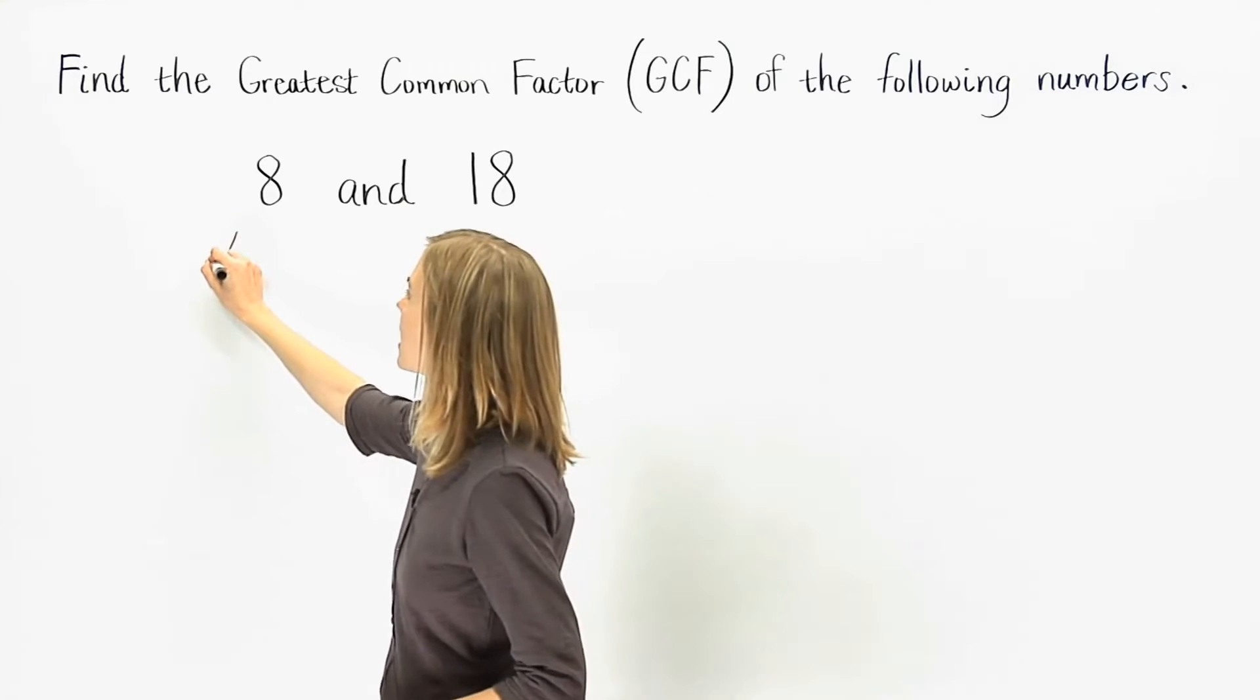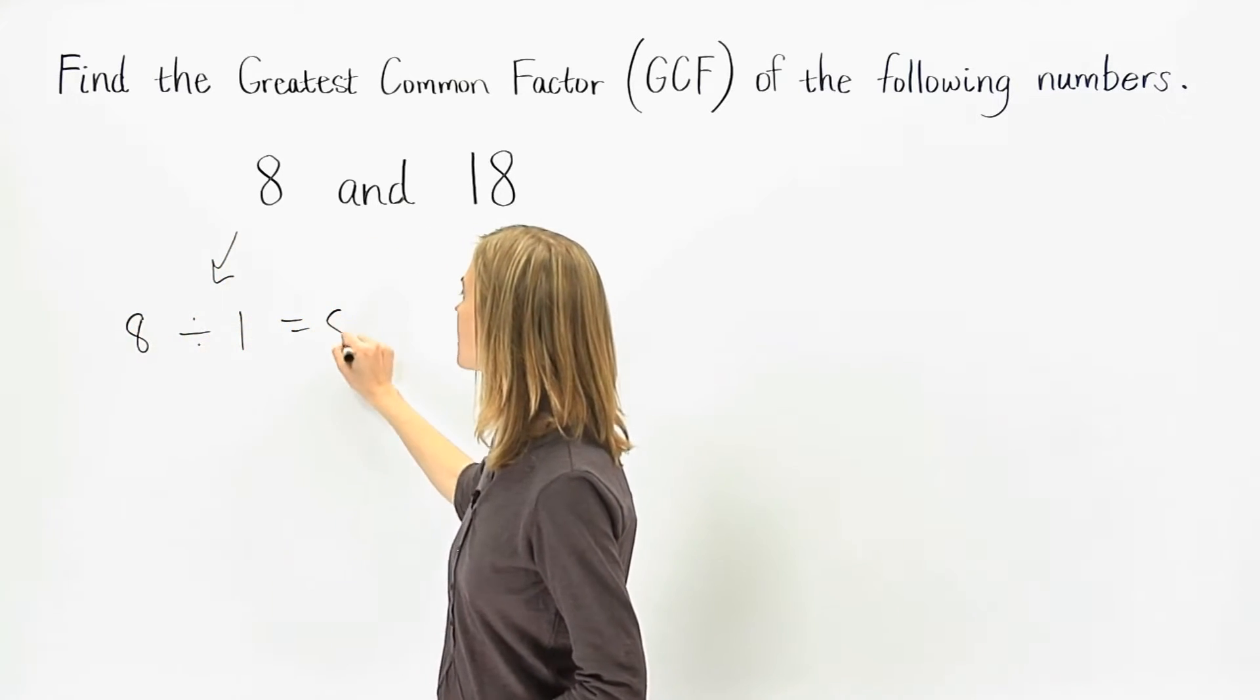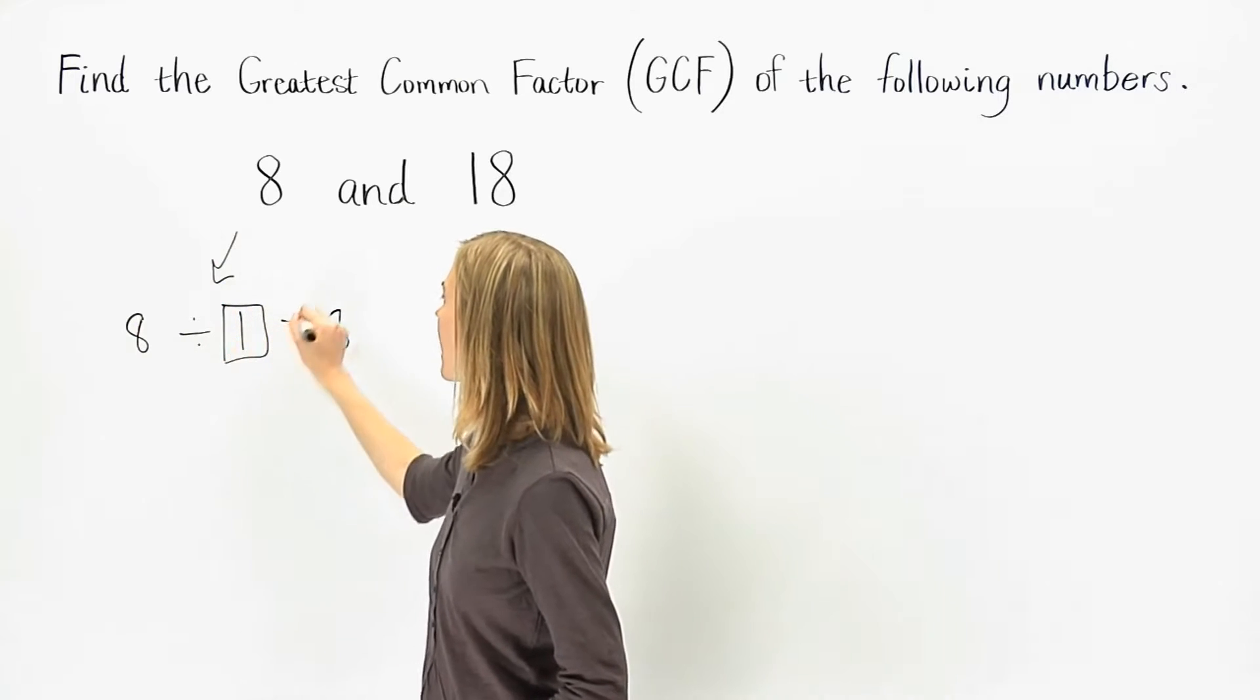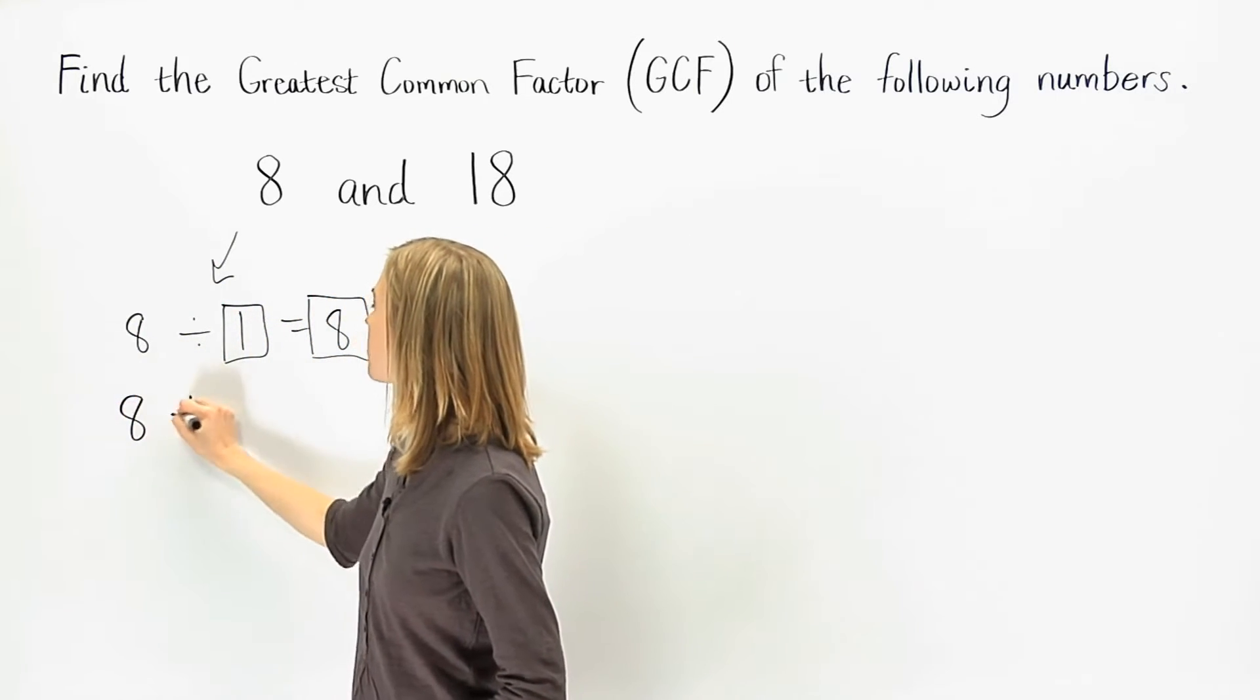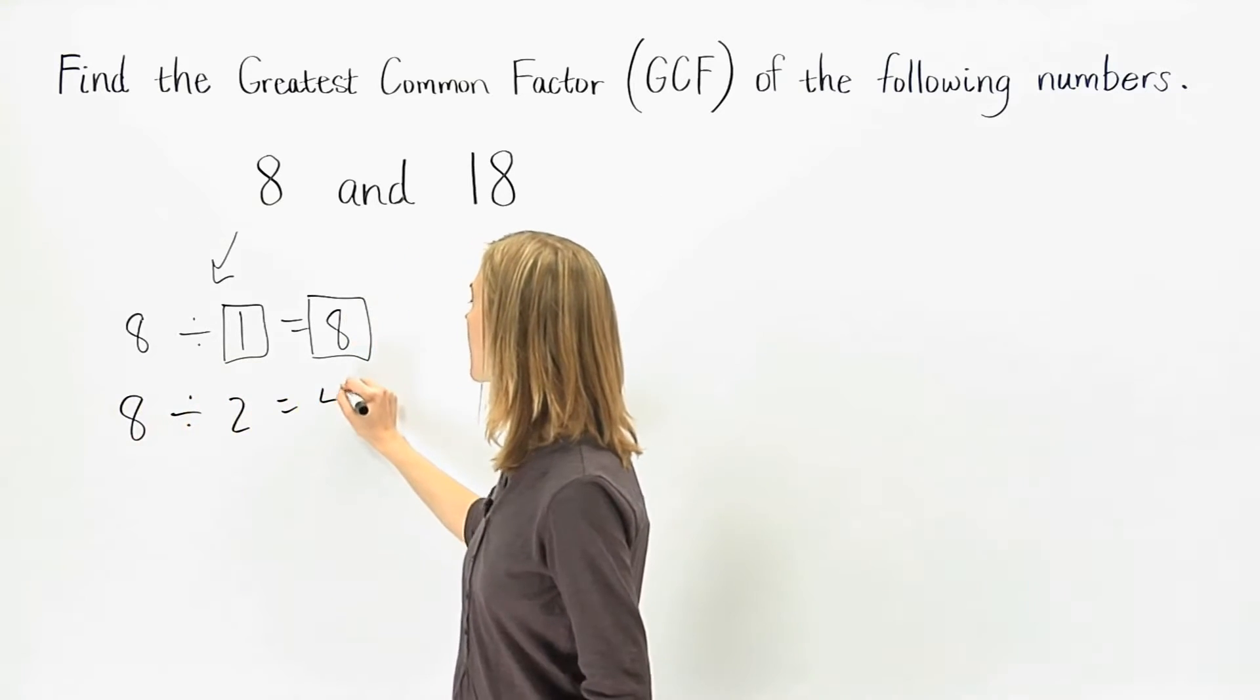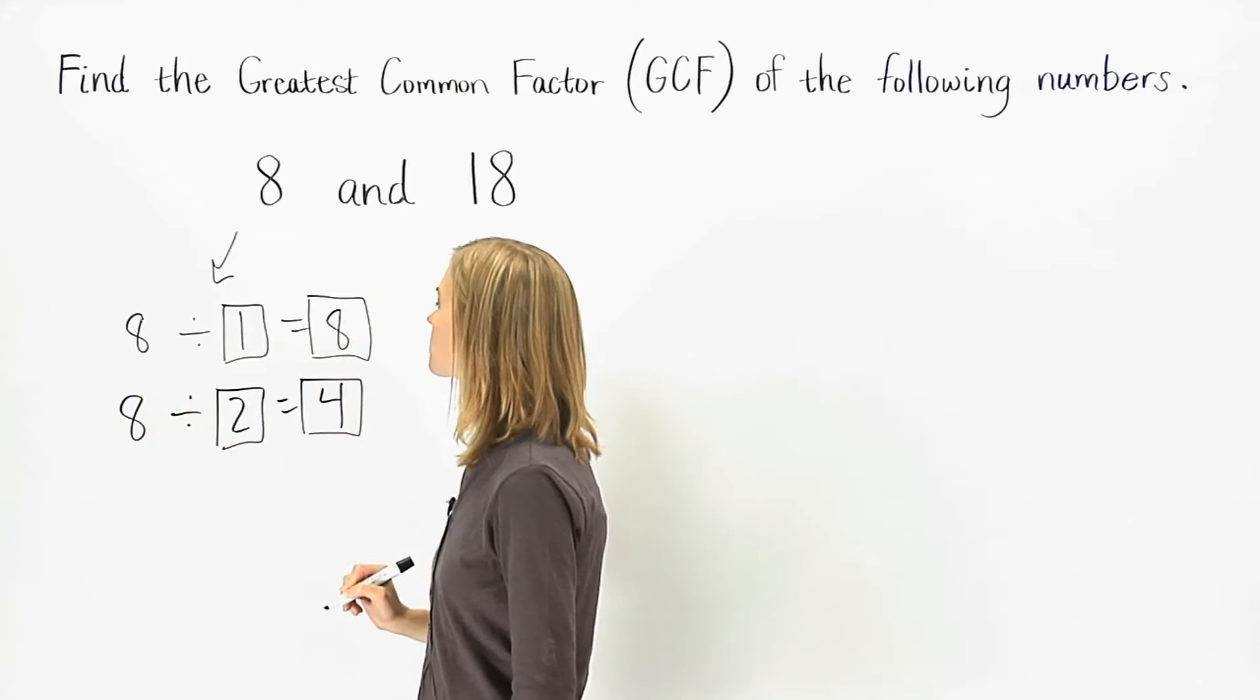To find the factors of 8, we know that 8 divided by 1 is 8, so 1 and 8 are factors. 8 divided by 2 is 4, so 2 and 4 are factors.